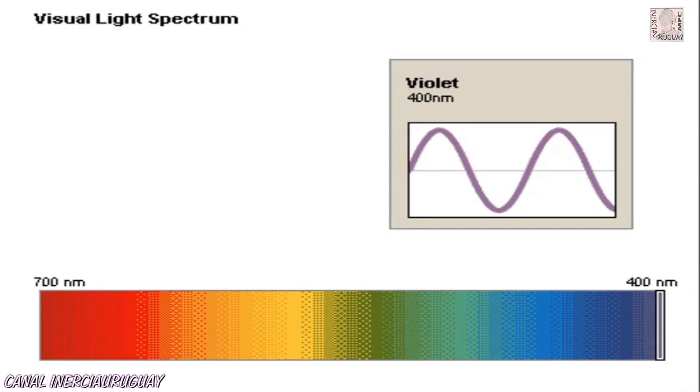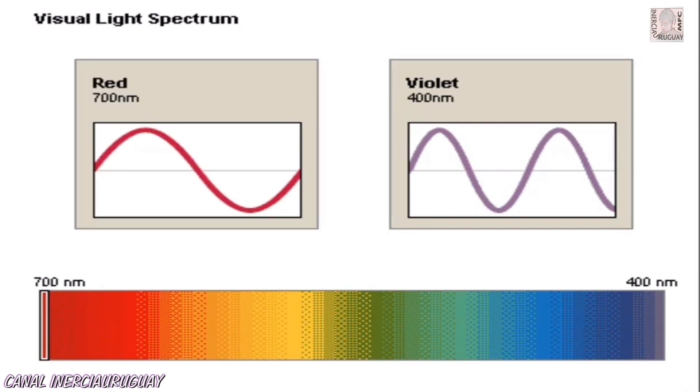Violet light has the shortest wavelength and highest frequency our eyes can detect. Red has the longest wavelength and lowest frequency we can see.